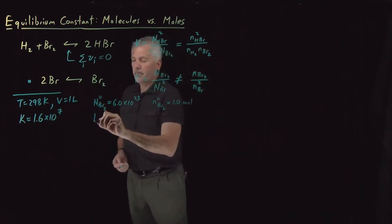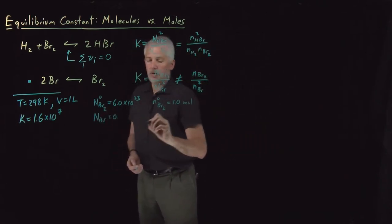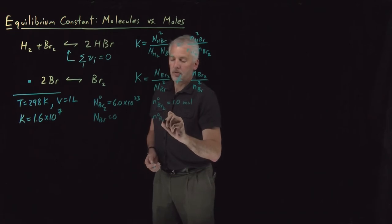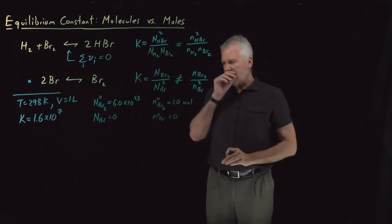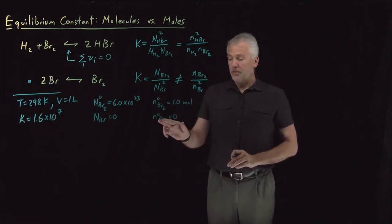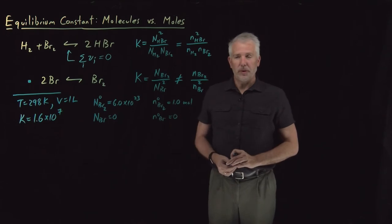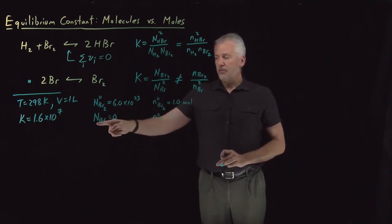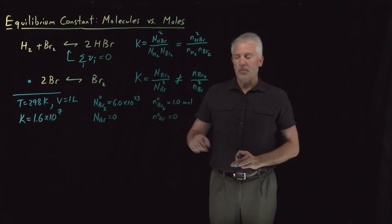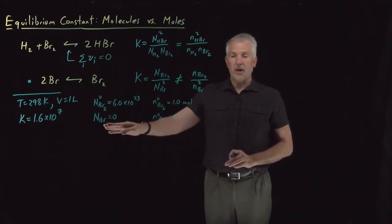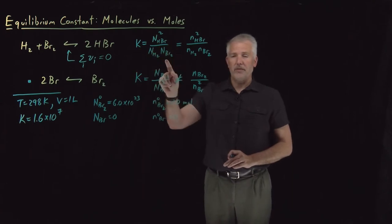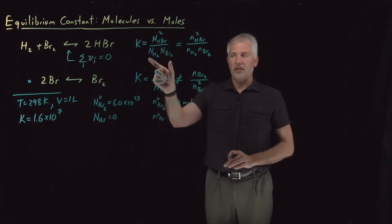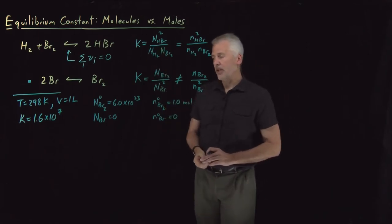Initially the amount of bromine atoms is 0, and likewise the number of moles of bromine atoms is 0. That's enough information to find how much Br₂ we'll have at equilibrium. We can do that problem in terms of molecules or moles. We'll start with molecules, because that's where we know the equilibrium condition is correct — it was derived in terms of molecules, so that equation is definitely correct.